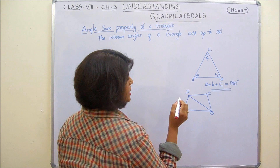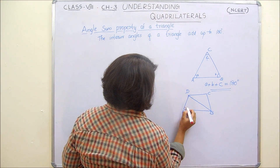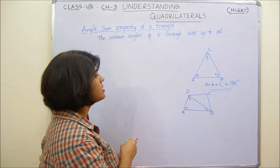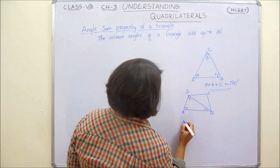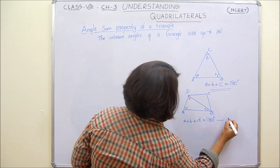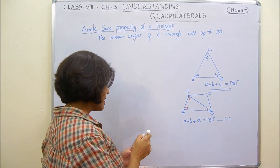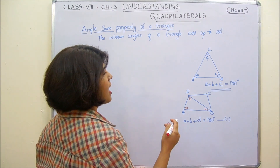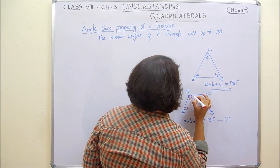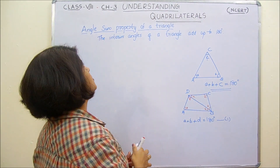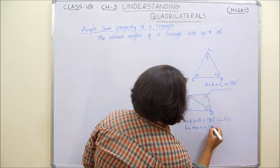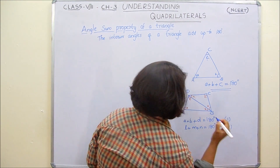Considering the angles of triangle ABD as small letters a, b, and d — by the angles and property of a triangle, A plus B plus D equals 180 degrees. We name this equation 1. And if we consider the angles of triangle BCD as L, M, and N respectively, then L plus M plus N equals 180 degrees. We name this equation 2.